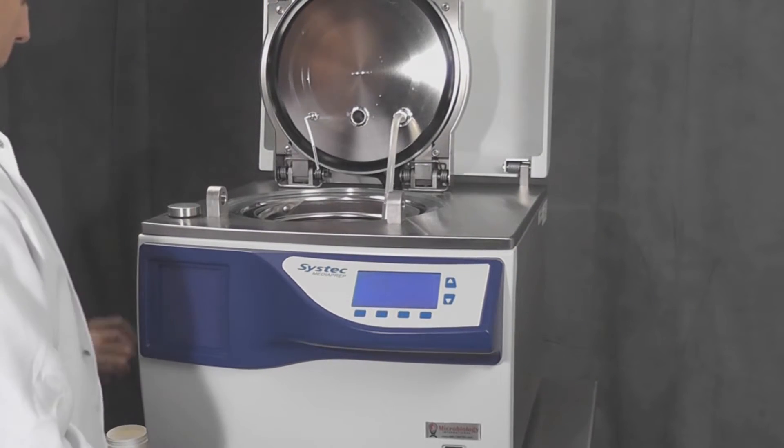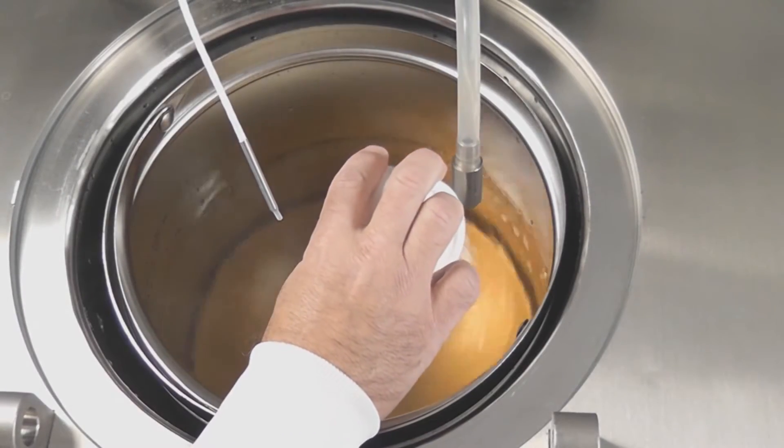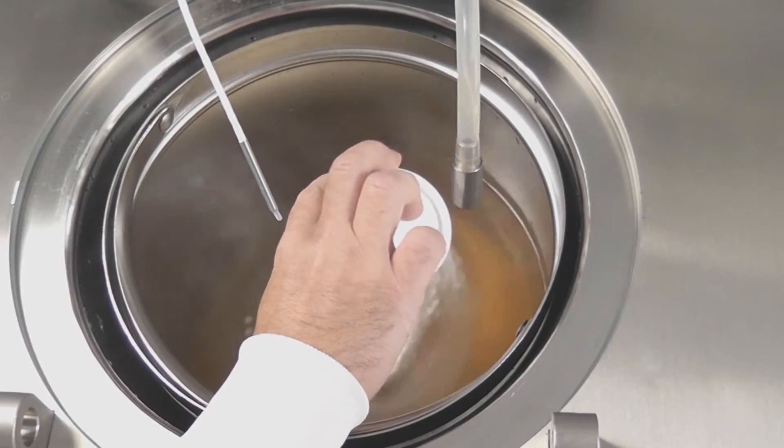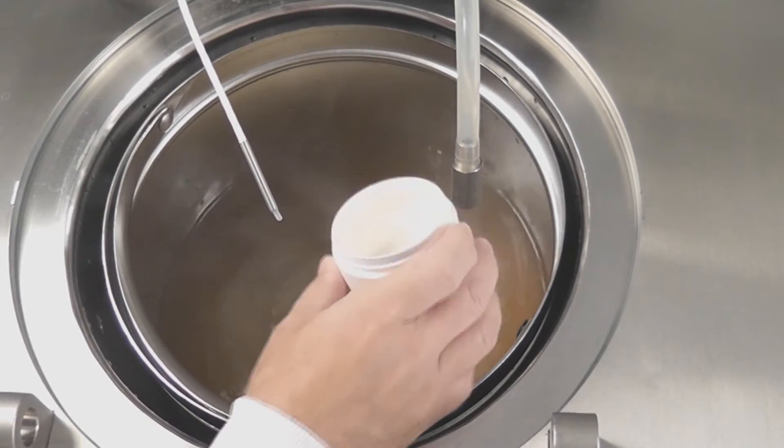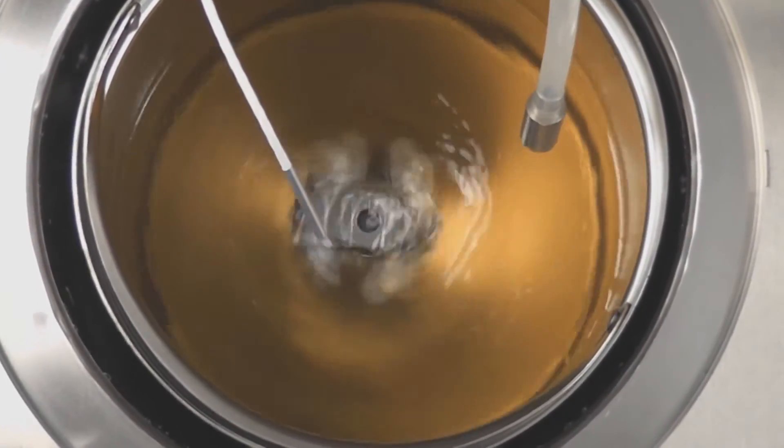After adding the appropriate volume of water in the sterilization vessel, dispense your dehydrated culture media. A magnetic stir bar ensures homogeneous mixing of your media throughout the entire sterilization, cooling, and pouring phases of the cycle.